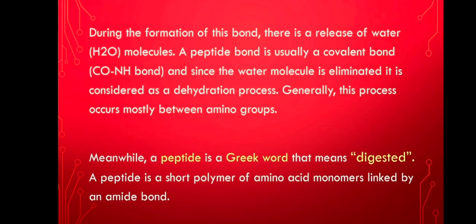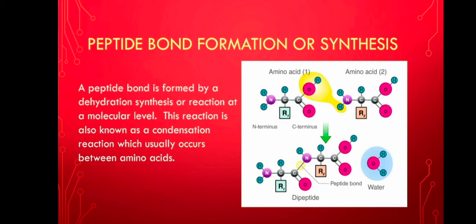During the formation of this bond, there is a release of a water molecule. A peptide bond is usually a covalent bond, and since the water molecule is eliminated, it is considered a dehydration process. Generally, this process occurs mostly between amino groups. A peptide is a Greek word that means digested. A peptide is a short polymer of amino acid monomers linked by amide bond. Peptide bond formation is formed by a dehydration synthesis because a release of a water molecule happens — a reaction also known as a condensation reaction, which usually occurs between amino acids.